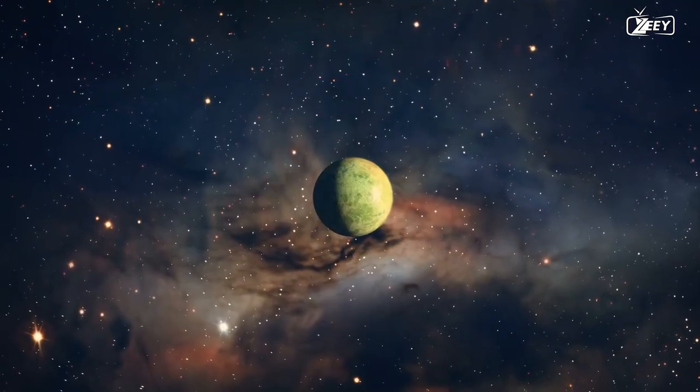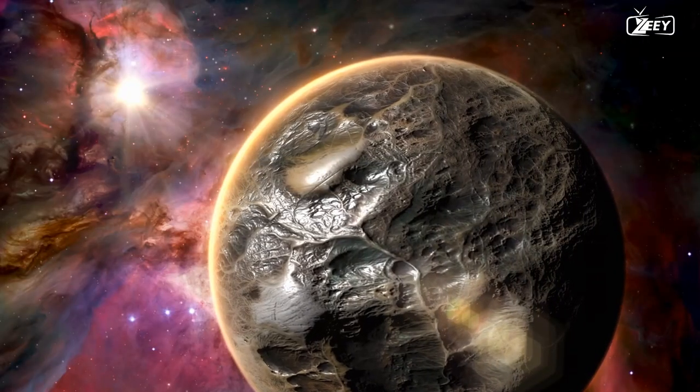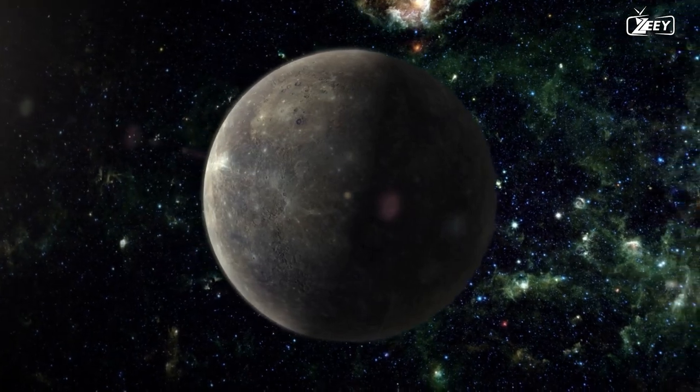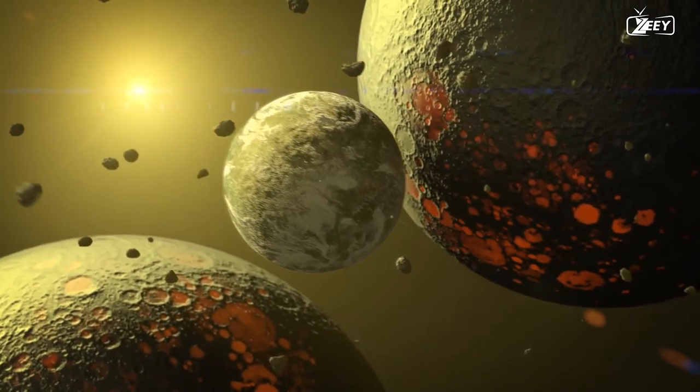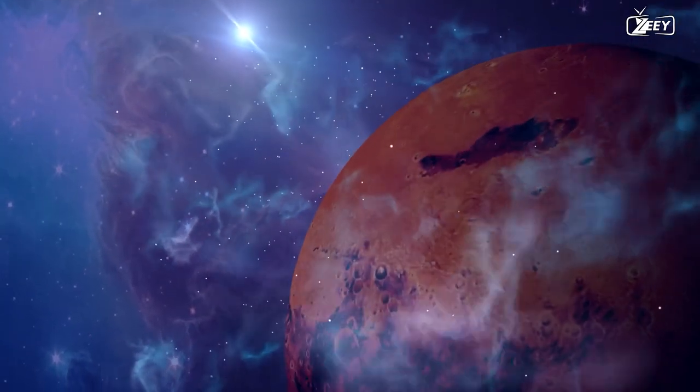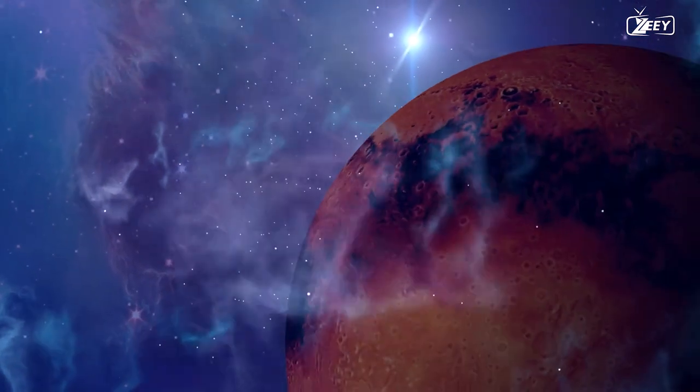The trans-Neptunian objects Orcus, 916 km, Salacia, 846 km, Khoror, 1,120 km, Gongong, 1,230 km, and Sedna appear to be other spherical objects of this size in the hydrostatic equilibrium, 995 km.